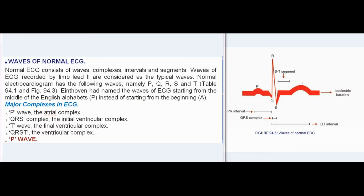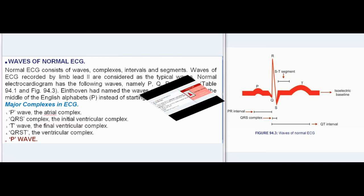Eindhoven had named the waves of ECG starting from the middle of the English alphabet — P — instead of starting from the beginning (A). Major complexes in ECG: P-wave (the atrial complex), QRS complex (the initial ventricular complex), T-wave (the final ventricular complex), and QRST (the ventricular complex).